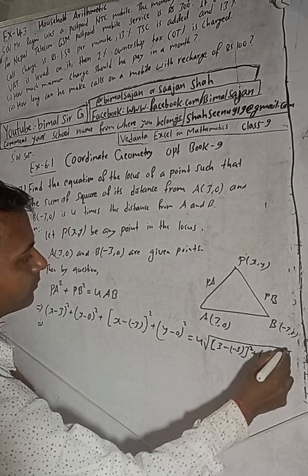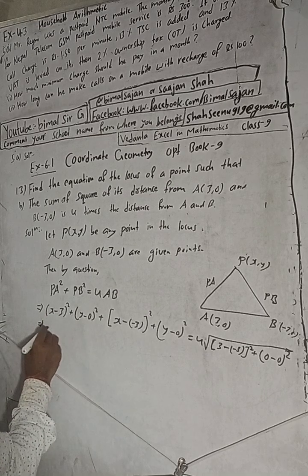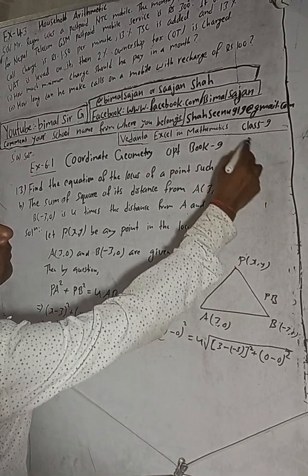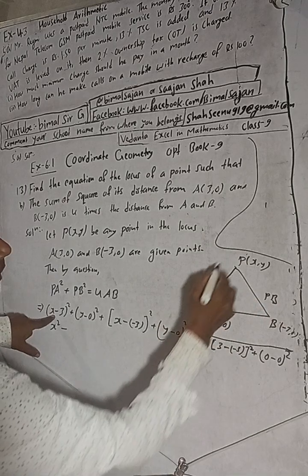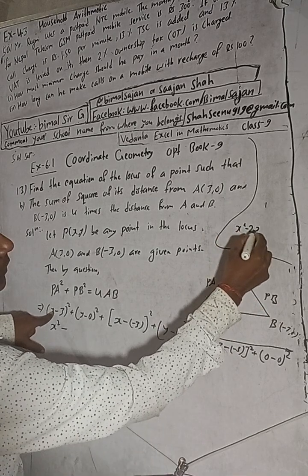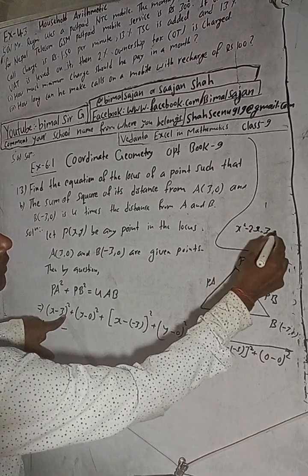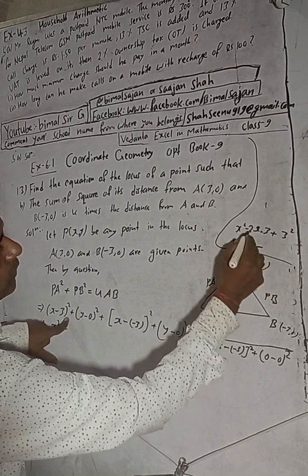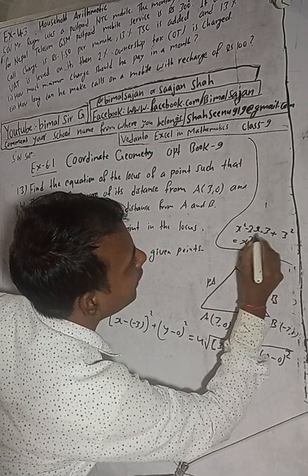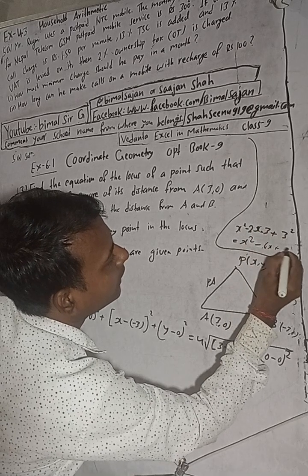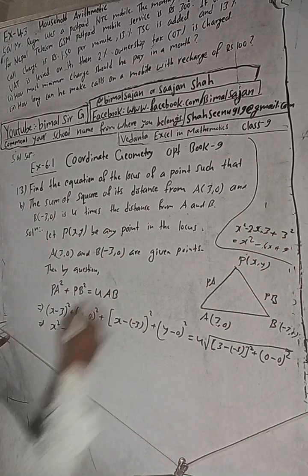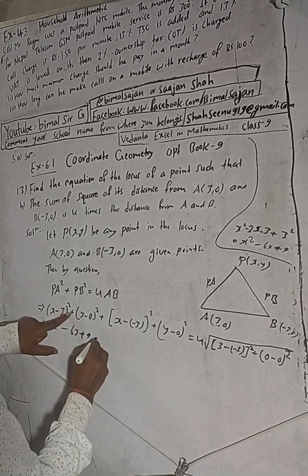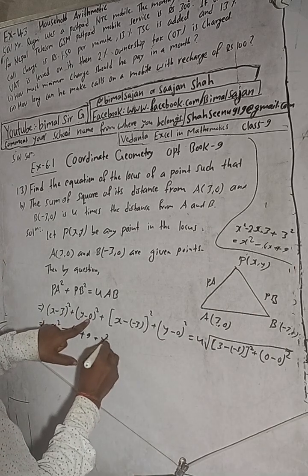Now expanding PA²: (x-3)² + y² = x² - 2·x·3 + 3² + y² = x² - 6x + 9 + y².